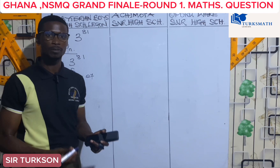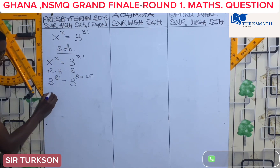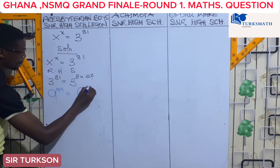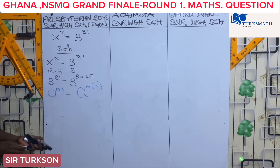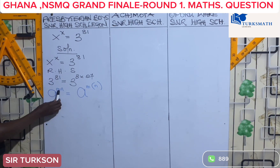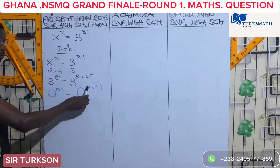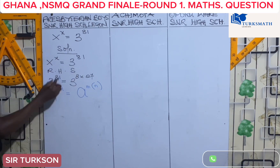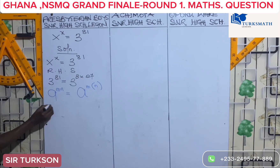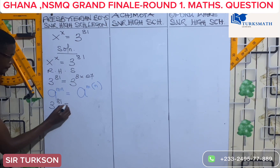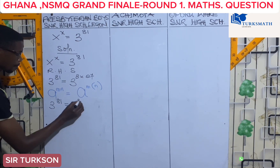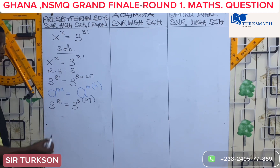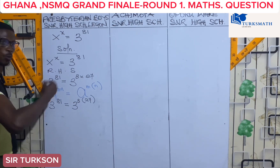From the right-hand side, we are going to apply the third law of indices. The third law of indices states that a exponent (n × m) is equal to (a exponent n) exponent m. This is the law we are going to use to solve this equation. We want to make the base equal to the exponent.